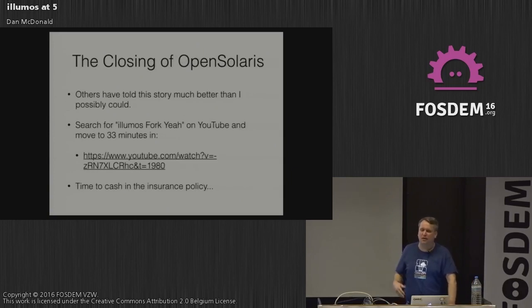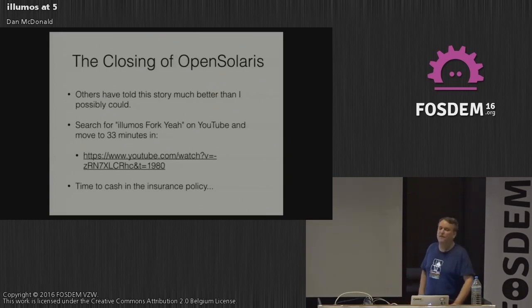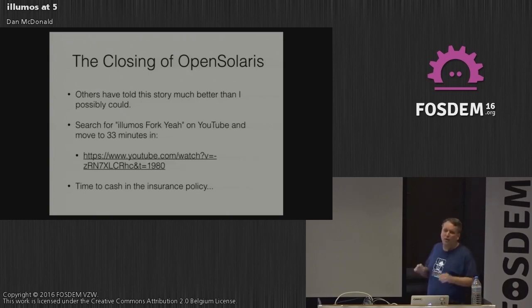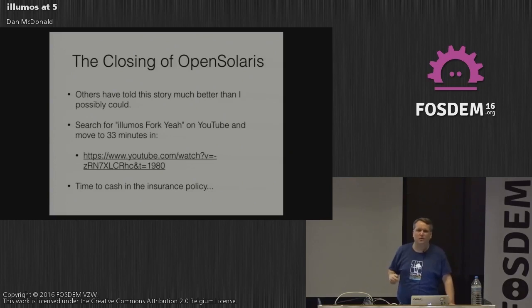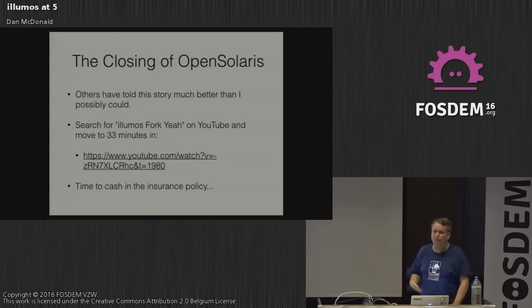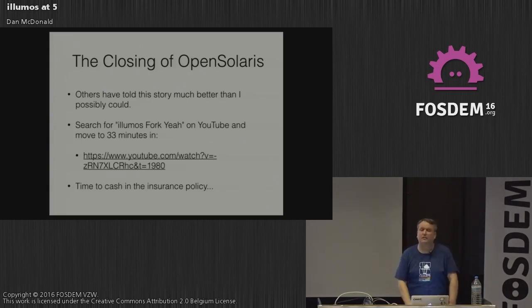I'm not going to dive too deep into this because there's a great video on YouTube by Joyent's Bryan Cantrill — highly recommend you look up 'Illumos fork' in the search box. If you want just the Oracle part, move in about 33 minutes; he gives a longer history of SunOS from his point of view. He worked in the kernel department upstairs from me in Menlo Park; I was in networking and security on the second floor. With Oracle disingenuously closing OpenSolaris, it was time to cash in the insurance policy.